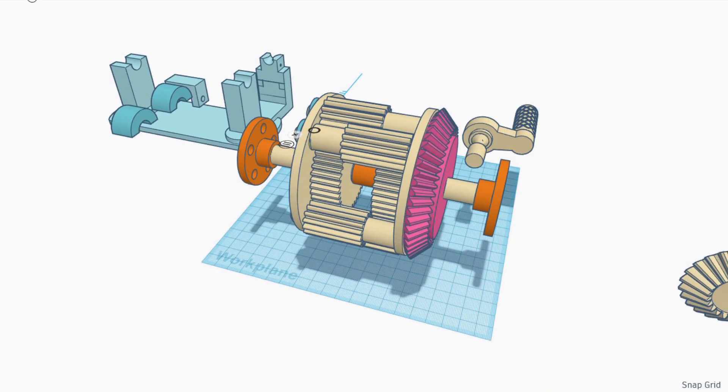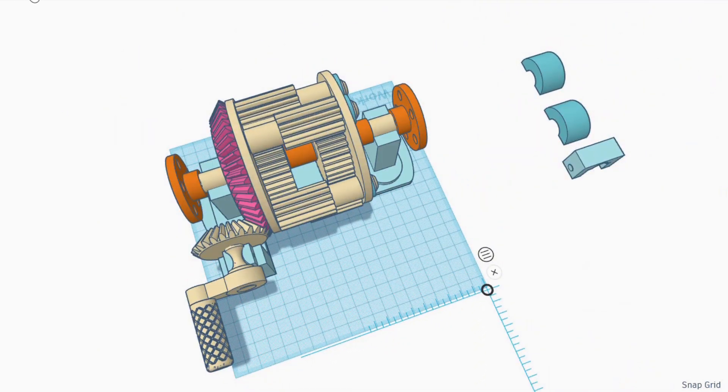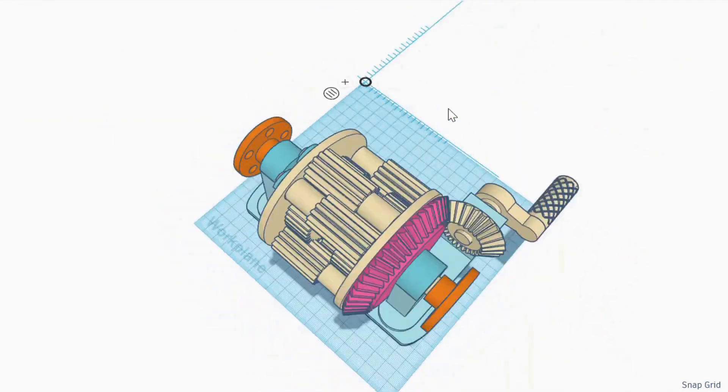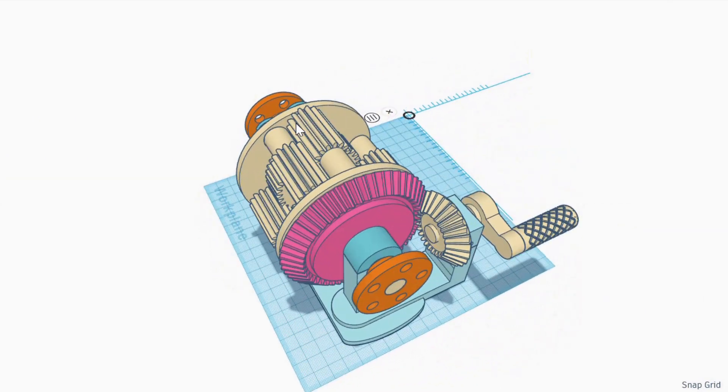On with the drive bevel, and then the connection flanges, the drive gear itself, and we can rest it back in the frame, and that is the Spur gear differential.